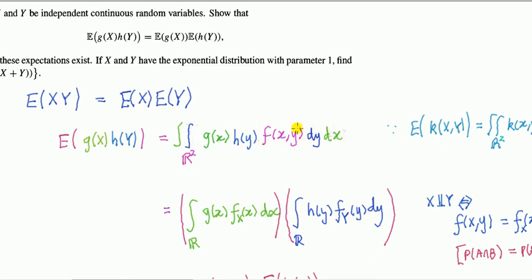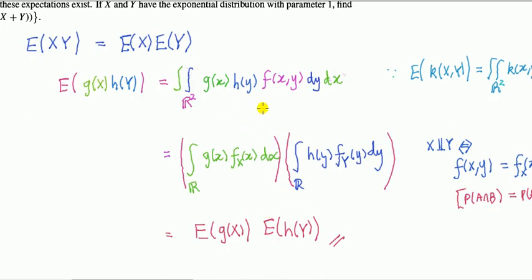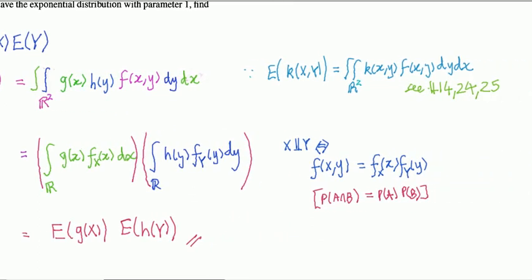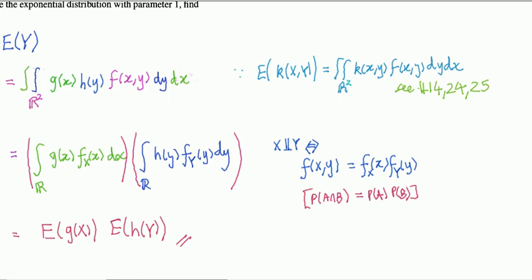This density here is called the joint density, because it's got more than one variable in it. So it's some function involving both x and y, satisfying the properties of a density function. That can be a headache to calculate, but the whole point is with independence, the thing simplifies. Why?